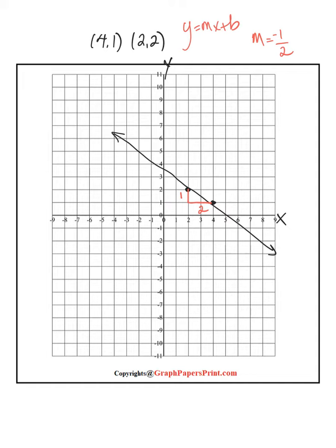If my slope is negative one-half, remember I can do negative one over two, or I can do positive one over negative two. Both will give me a positive divided by a negative, which is negative.